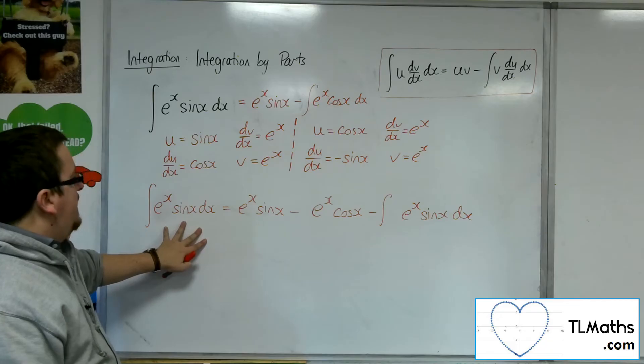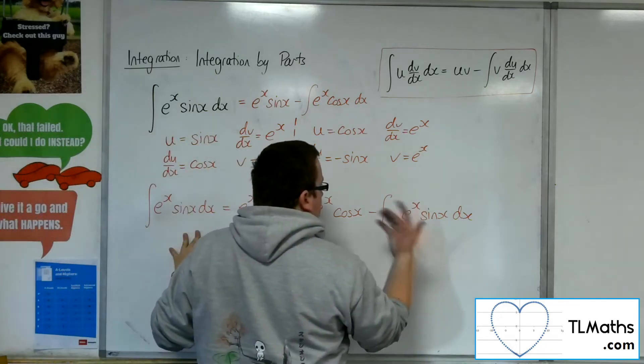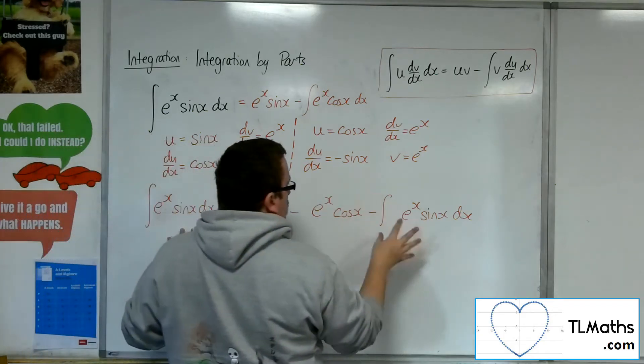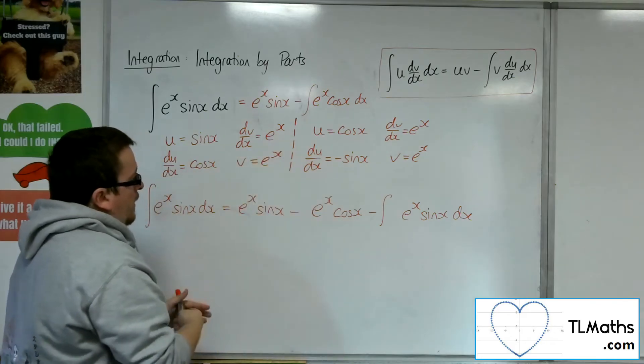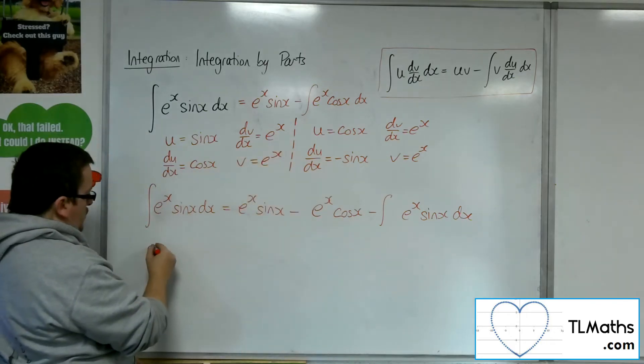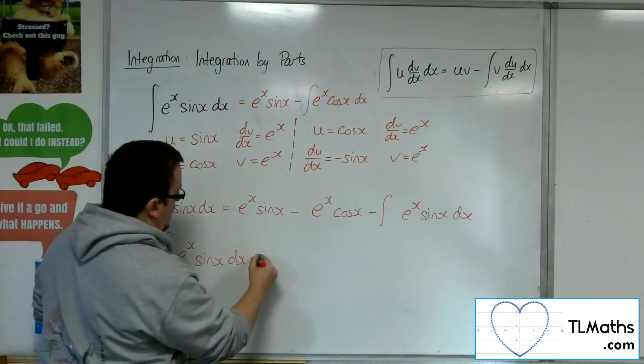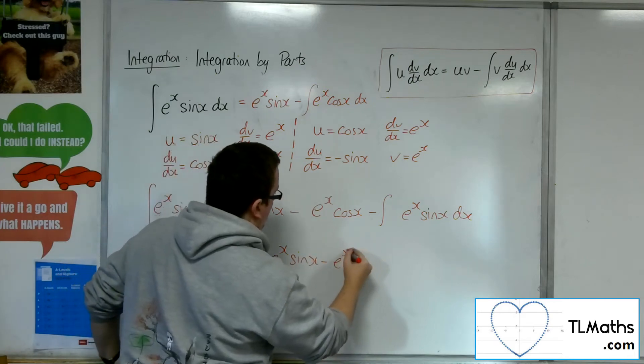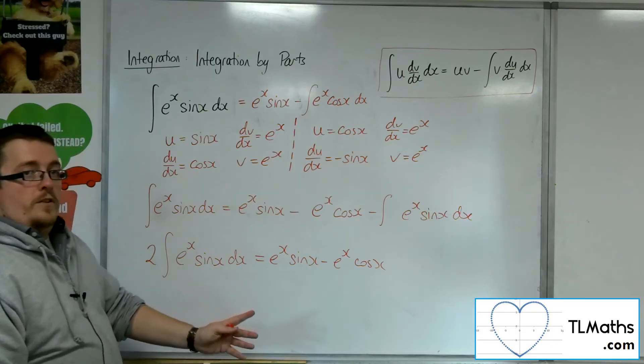Because I've got the integral of e to the x sine x here, I've got minus the integral of e to the x sine x here. So if I add the integral of e to the x sine x to both sides, I would be left with two lots of the integral of e to the x sine x dx to be equal to e to the x sine x minus e to the x cosine x.